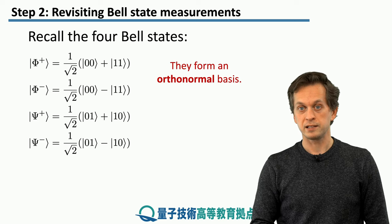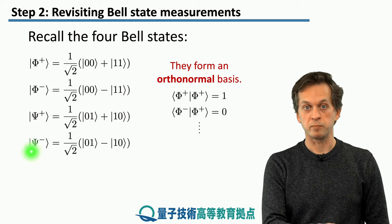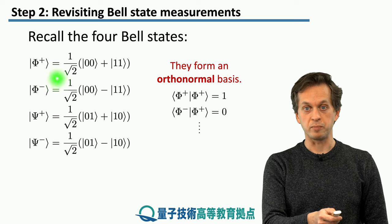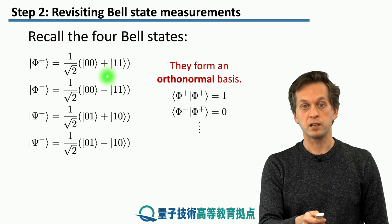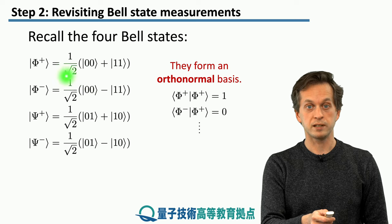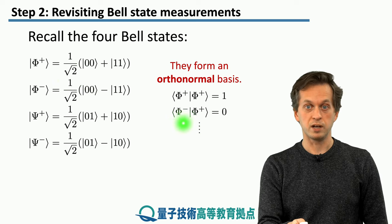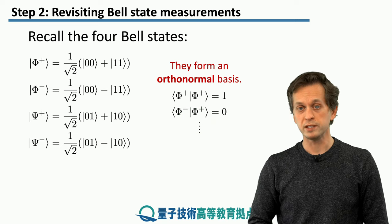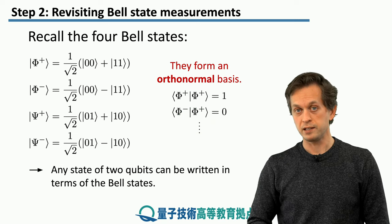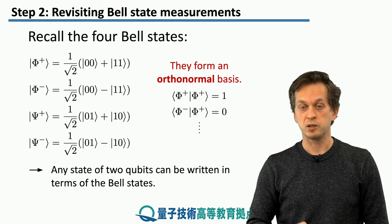We saw that these states are orthonormal. What that means is that if you take the inner product of a Bell state with itself — for example Phi plus — then you get 1, meaning it is normalized. But if you take the inner product of one of these states with some other state, you get 0. For example, the inner product between Phi minus and Phi plus is 0. This means we can take any pure state of two qubits and write it in the Bell basis.